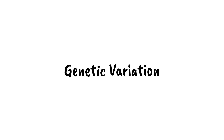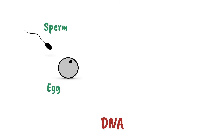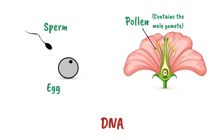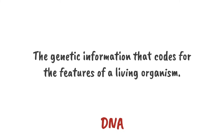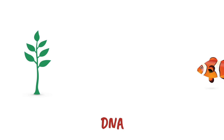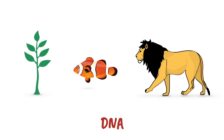Let's start with the genetic variation that arises from sexual reproduction. Like all cells, gametes contain DNA. Whether we're talking about egg and sperm cells from animals, or the gametes found in pollen and ovules in flowering plants, they all contain the parent organism's DNA. DNA is the genetic information that codes for the features of a living organism — how tall a plant is, the shape of a fish's fins, the strong muscles in a lion's legs — most features are determined, at least in part, by an organism's DNA.